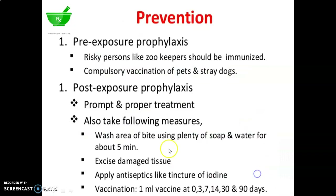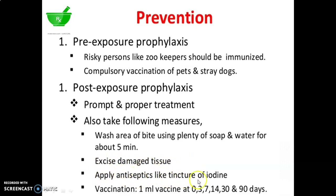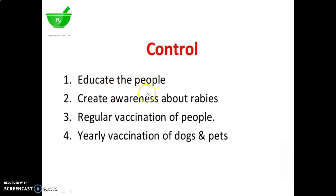Prevention: pre-exposure prophylaxis — risky persons like zookeepers should be immunized. Compulsory vaccination of pets and stray dogs. Post-exposure prophylaxis requires prompt and proper treatment. Also take the following measures: wash the area of bite using plenty of soap and water for about 5 minutes, excise damaged tissue, apply antiseptics like tincture of iodine. Vaccination: 1 ml vaccine at 0, 3, 7, 14, 30, and 90 days. Control: educate the people, create awareness about rabies, regular vaccination of people, yearly vaccination of dogs and pets.